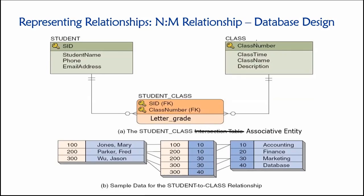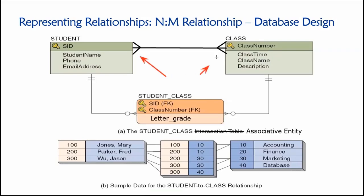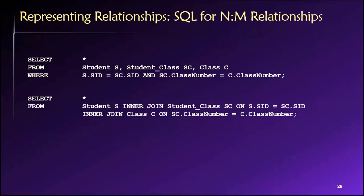So if you have an intersection table that contains non-key attributes, as we see here with the letter grade attribute, then this is an associative entity rather than just an intersection table or lookup table. We're storing additional information about it. Do keep in mind that what we're modeling conceptually is a many-to-many relationship between students and classes. To implement it in a real-world database, we need this intersection table — or in this case an associative entity — to sit between them. When we implement it, the many ends will touch that third table, and the other side will be ones.